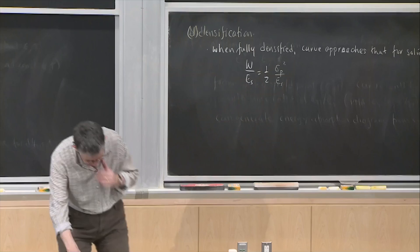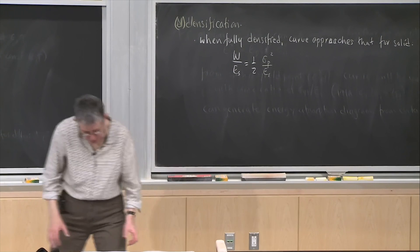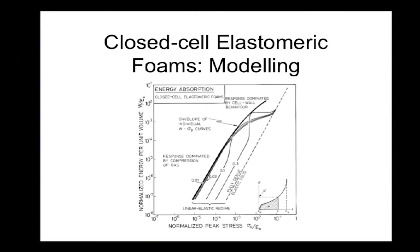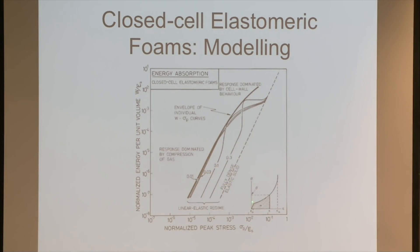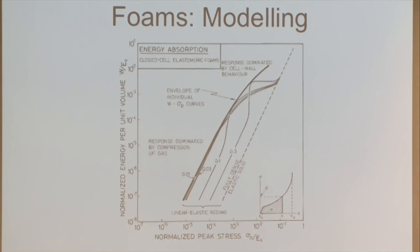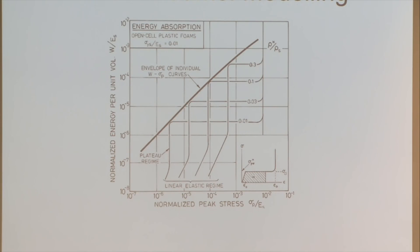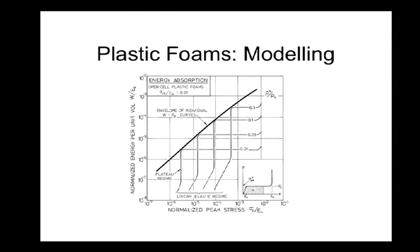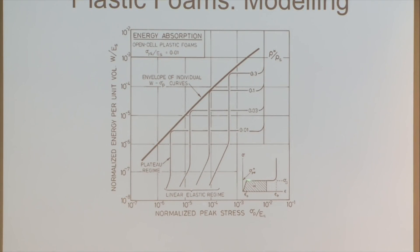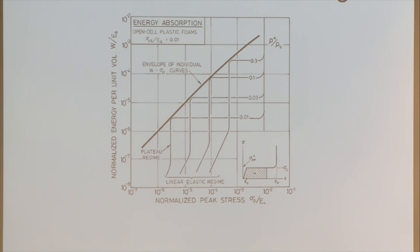You can do a similar thing for closed-cell foams and get diagrams that look similar. One difference is that if you assume the faces don't rupture, the plateau stress is not horizontal — there's a gas pressure contribution to account for. For foams with a yield point, you can generate a similar diagram, but now instead of elastic failure you have plastic failure forming plastic hinges. Again, this diagram is less general than for elastomeric foams — it would be valid only for a particular ratio of sigma_ys over E_s.